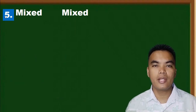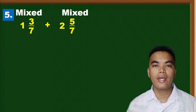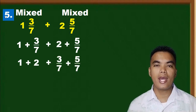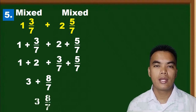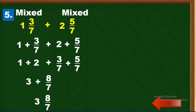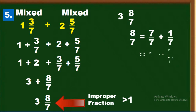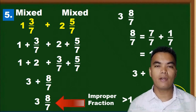Another example: one and three over seven plus two and five over seven. Using the commutative property, we add whole numbers and fractions separately: one plus two is three, and three over seven plus five over seven is eight over seven. Since eight over seven is greater than one, we rewrite it as seven over seven plus one over seven, and seven over seven equals one. So three plus one gives four, and our final answer is four and one over seven.